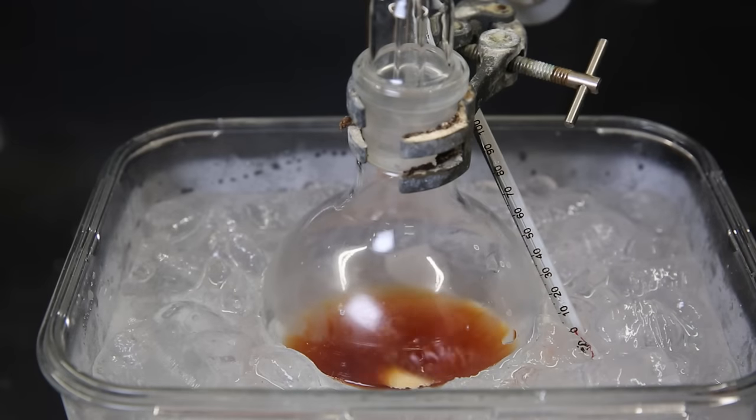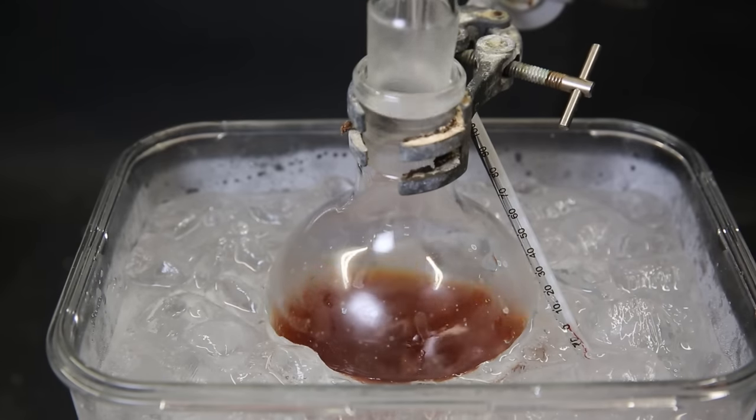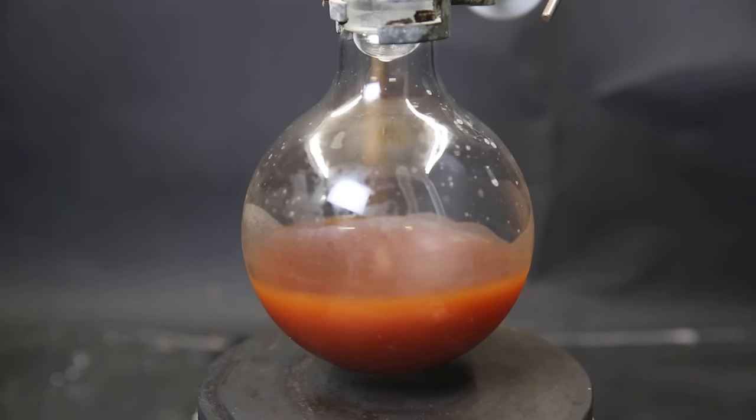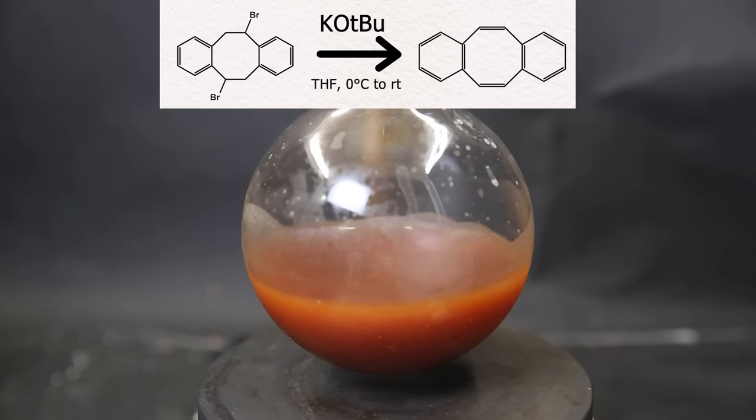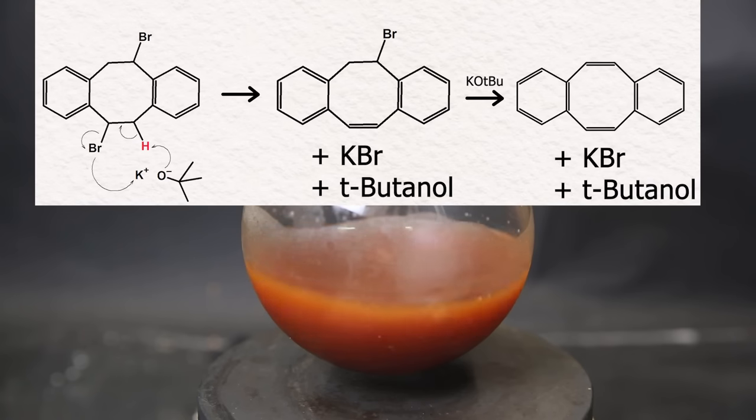The reaction mixture quickly changes color and gradually becomes darker. When the addition is complete, I remove the dropping funnel and the ice-salt-water bath. I then leave it to stir for 3 hours at room temperature to allow the reaction to complete. During this reaction, the KOtBu will react with the brominated product to form the final product containing the double bonds. To explain this reaction requires a bit more detail. Since KOtBu is an extremely strong base, it can take up a hydrogen easily. The tert-butoxide will steal a hydrogen from the carbon adjacent to the carbon the bromine is attached to and become tert-butanol.